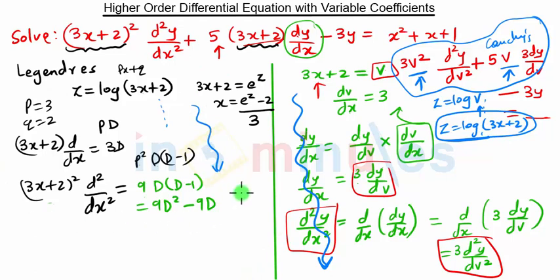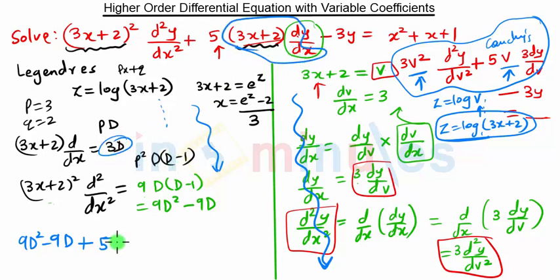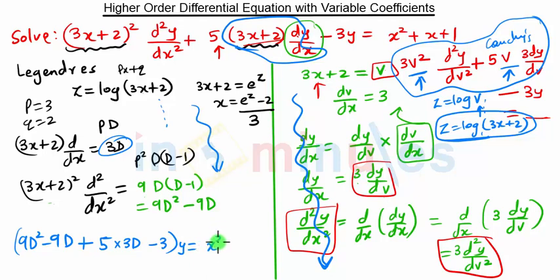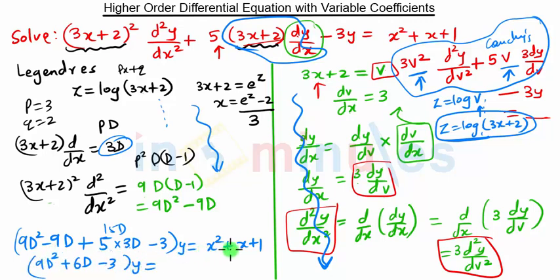This is the basic substitution of Legendre's equation. Now substituting into the terms: (3x plus 2) squared times d squared y by dx squared becomes 9d squared minus 9d times y, plus 5 times (3x plus 2) times d by dx which is 3d, giving 15d. And minus 3y. Taking y common from all terms: 9d squared plus 6d minus 3 times y.